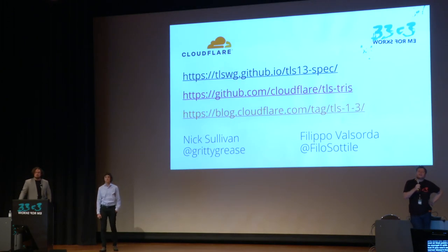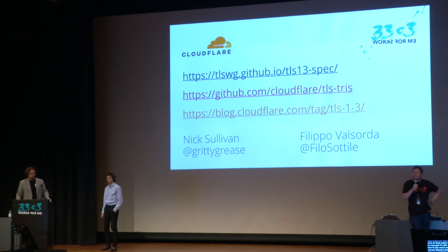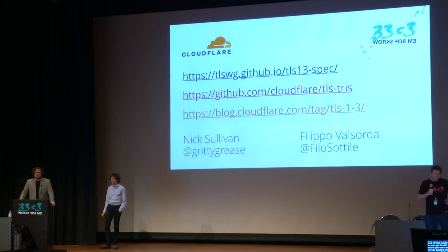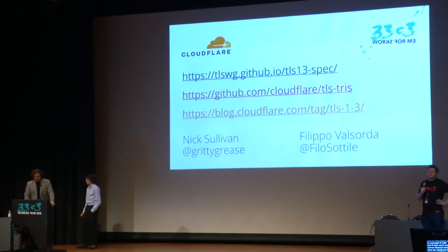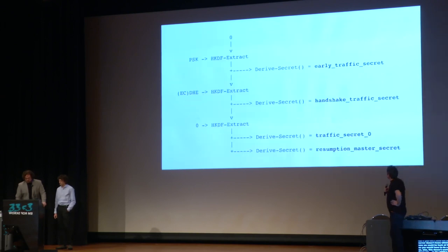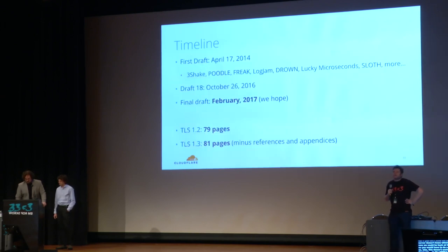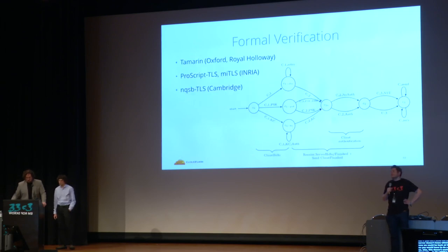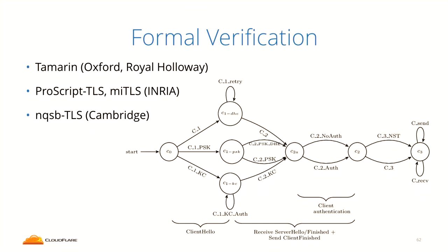Q: What software was used for formal verification of TLS 1.3? A: Several implementations and tools were used: Tamarin, developed by Cas Cremers and others at Oxford and Royal Holloway; MITLS in F#, by Inria; and NQSB-TLS in OCaml. Several different languages and formal methods were used.